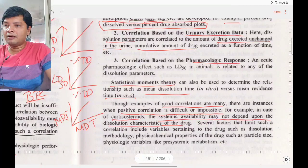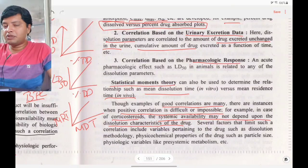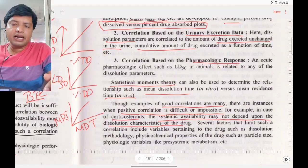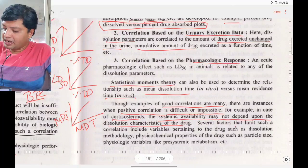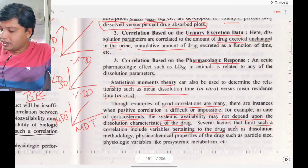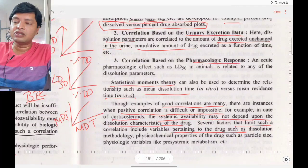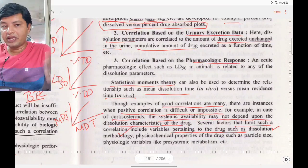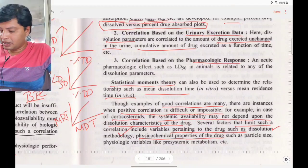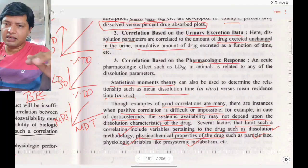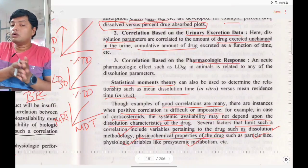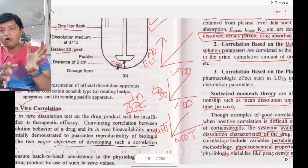Even with drug present in the stomach, active absorption limits uptake independently of dissolution. IVIVC is applicable only when passive absorption is the mechanism. Several factors limit such correlation: drug dissolution methodology, physicochemical properties of the drug such as particle size, and physiological variability such as pre-systemic metabolism. Despite these factors, if good correlation is obtained, we can proceed.